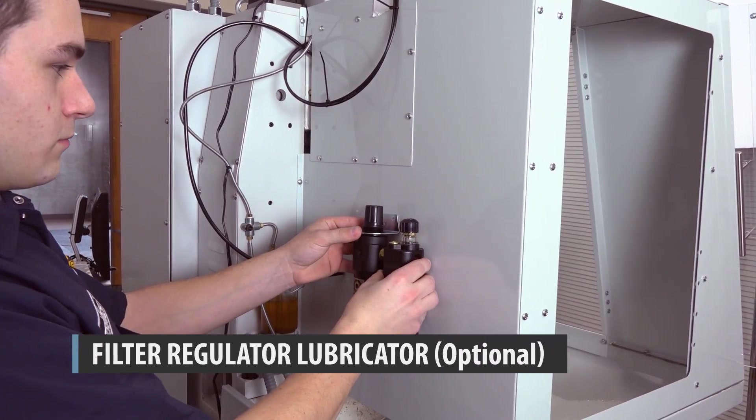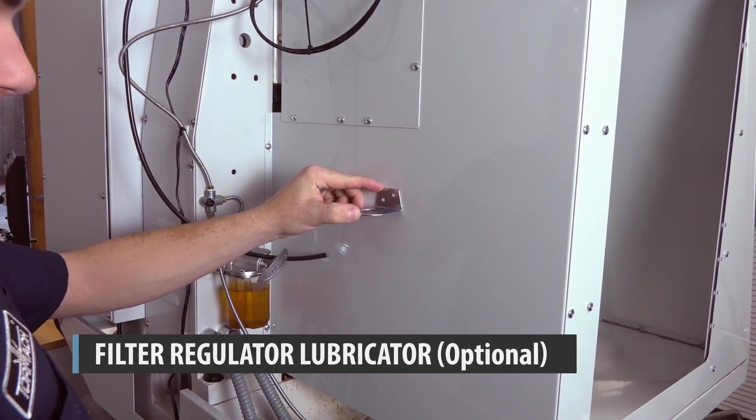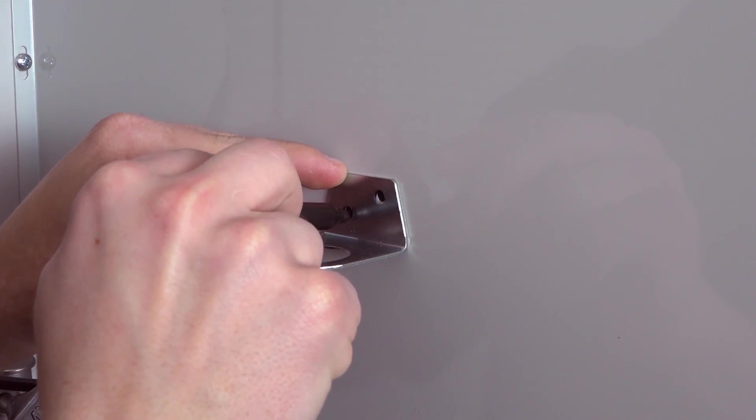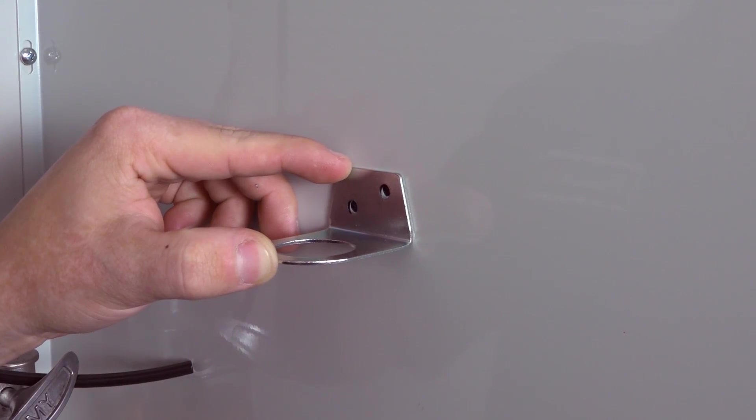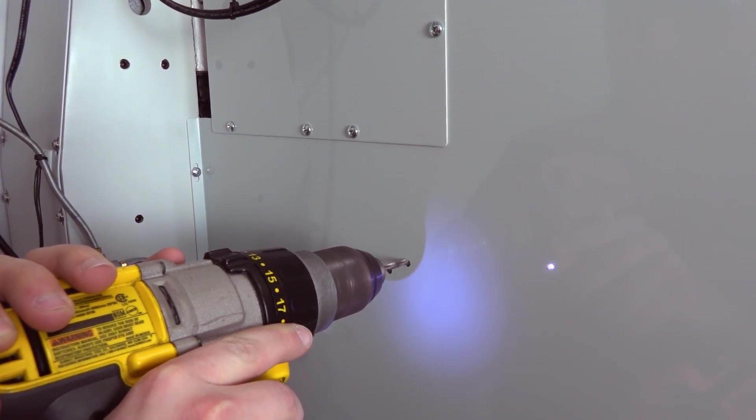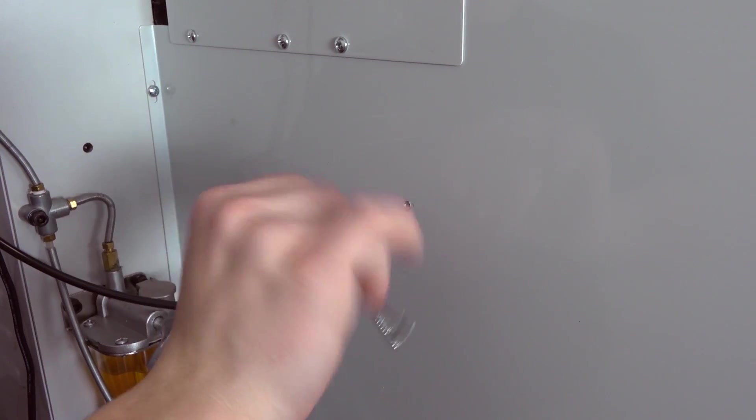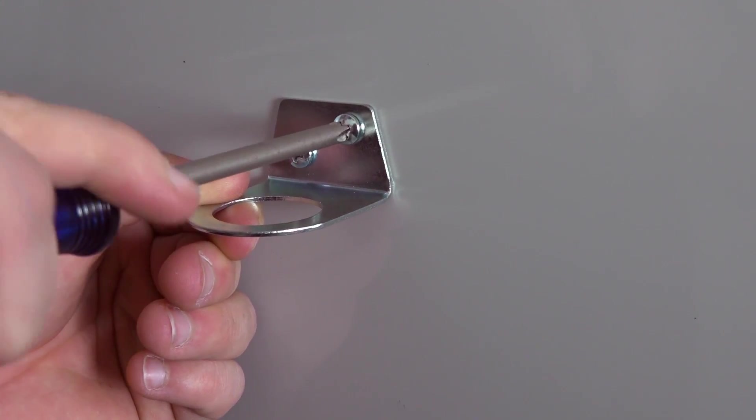If you are planning on using an FRL, this would be a good point to install one. Find a convenient location for the FRL, then mark the location of the screws using the mounting bracket. Drill the two holes using a number 21 drill bit. Then tap the two holes using a 10-32 tap. Secure the bracket with the provided machine screws.